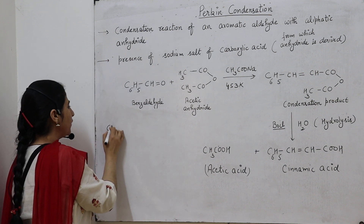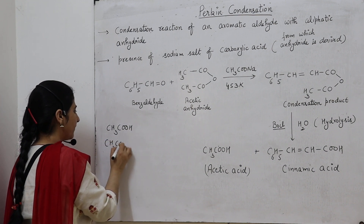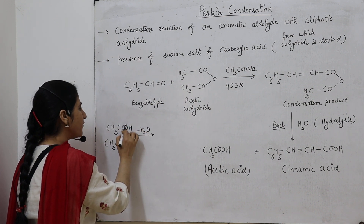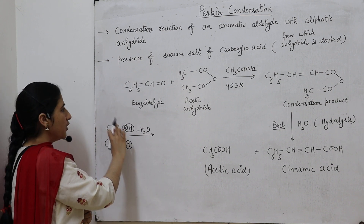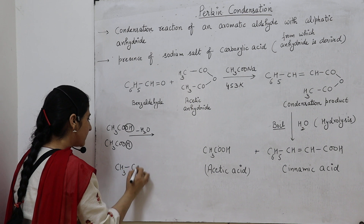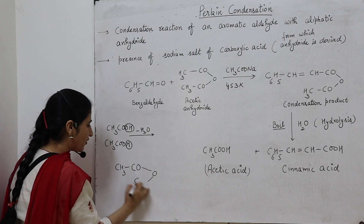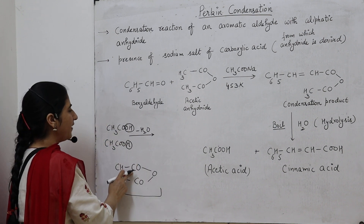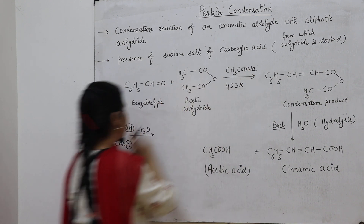To understand how acetic anhydride is formed: we take two molecules of acetic acid, which undergo dehydration — loss of water — where OH from one molecule and H from the other are removed. The remaining molecules combine to form acetic anhydride, which is CH₃-CO-O-CO-CH₃. Since acetic anhydride is derived from acetic acid, that is why we use sodium acetate, the sodium salt of acetic acid.